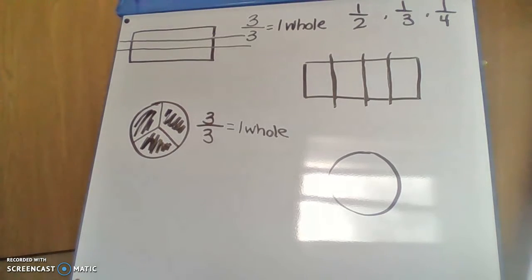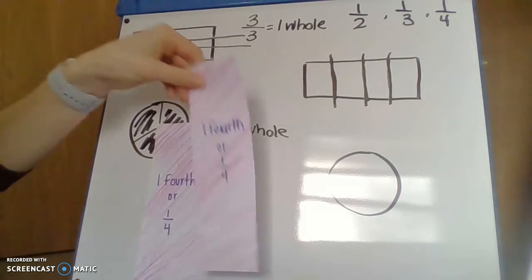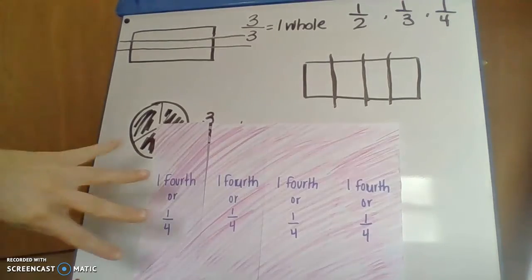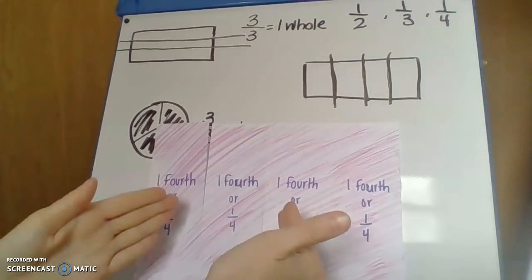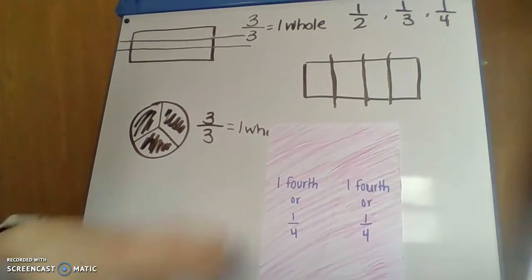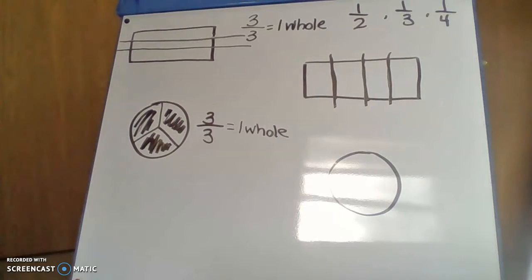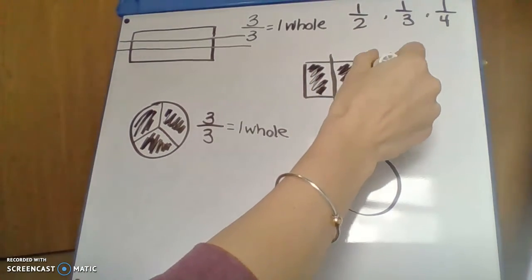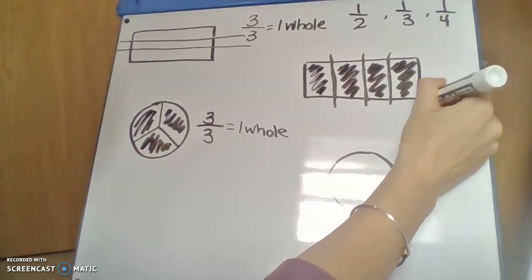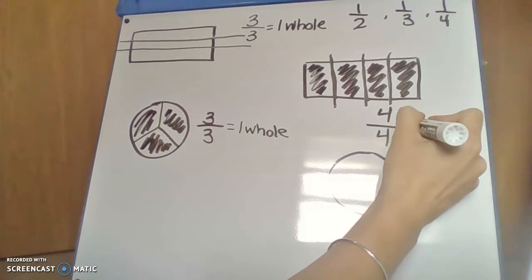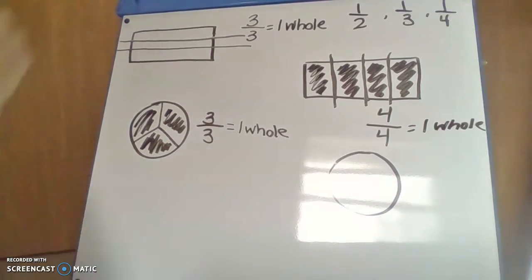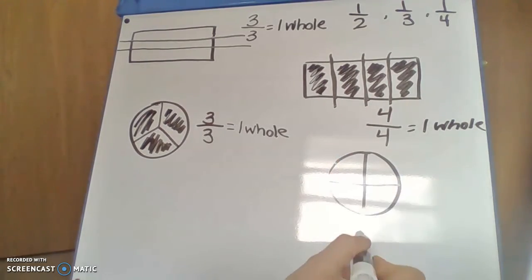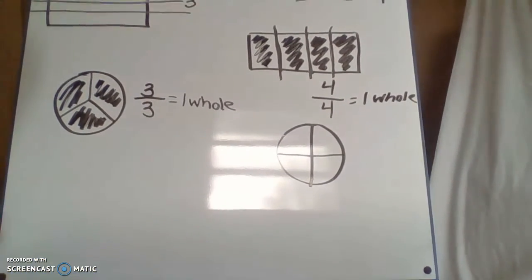So before we count those, that's one fourth, two fourths, three fourths, four fourths, or one whole because they're all colored in and they're all together. So that's four fourths. So now let's go to our picture. And if we color all of these in, that would be four fourths because there's four colored in and there's four total. And that would equal one whole.